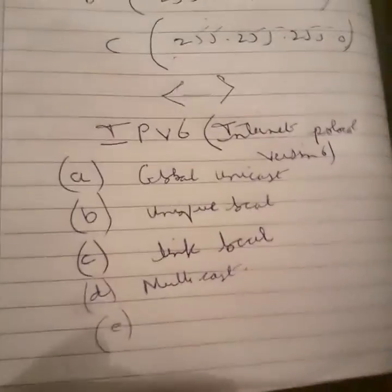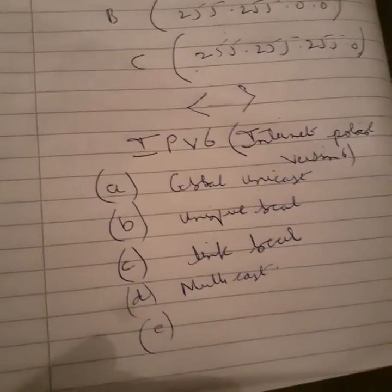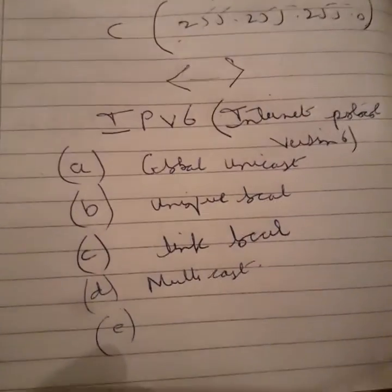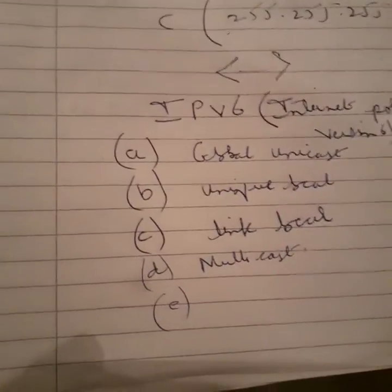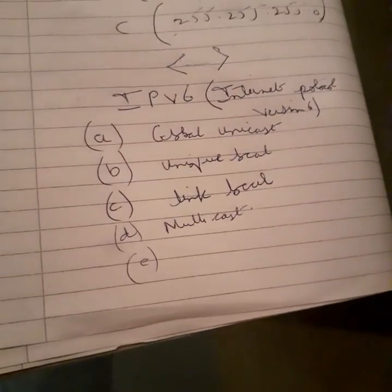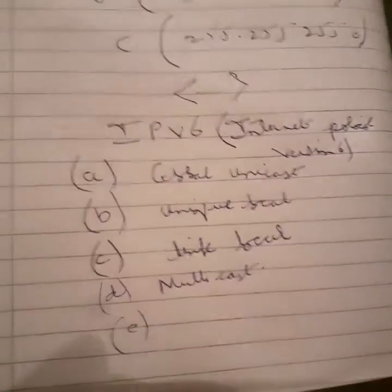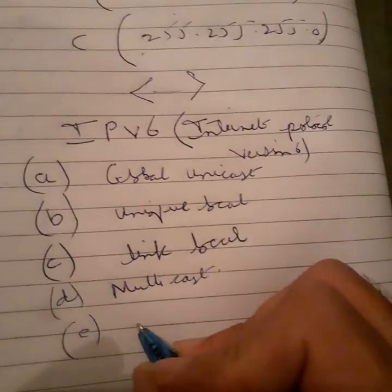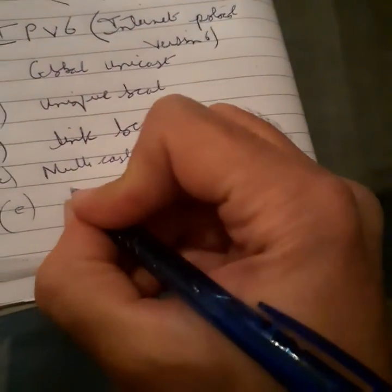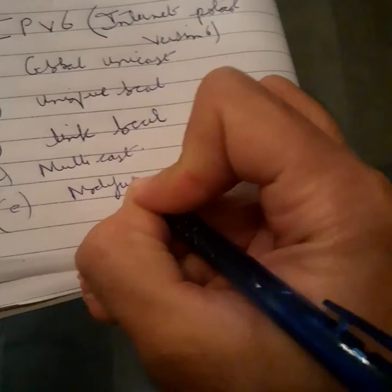And then we have Modified EUI 64 addresses. Actually, yes. It can be an address type, EUI modified.